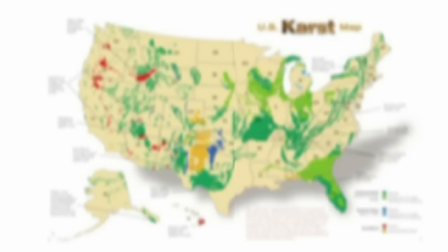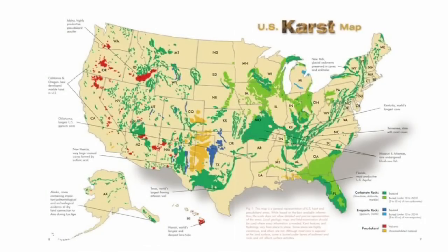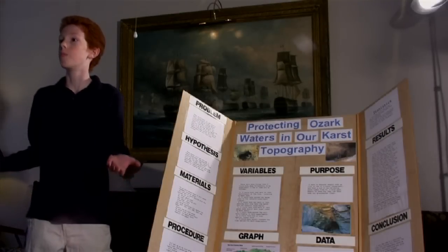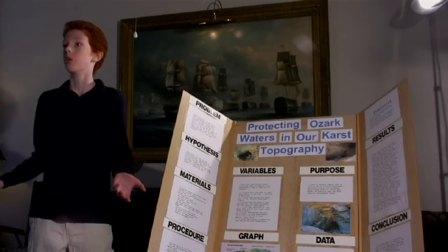The underground water system is just as advanced, or more advanced, than the water system you see here. 40% of the United States drinks water from a karst topography. 25% of the world — 1.5 billion people — drink from a karst topography.